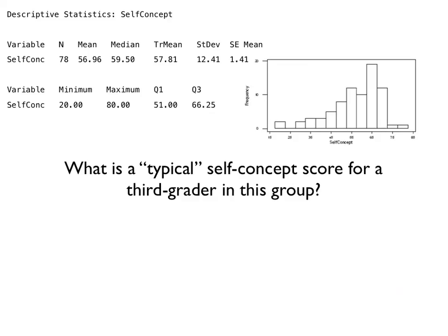This last question is asking for a typical score. Typical in this case sort of means, where is the center of this distribution? Now, because we have this skew in the distribution, because we have a left skew,